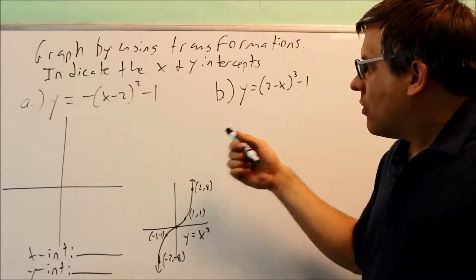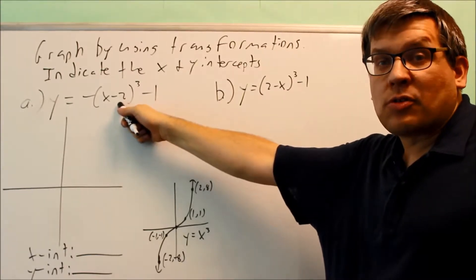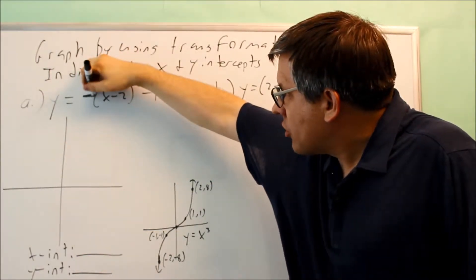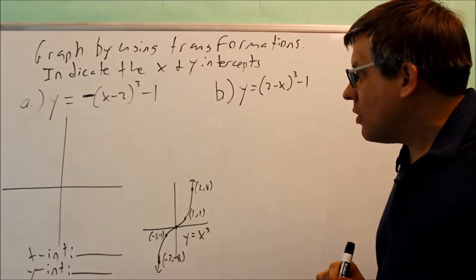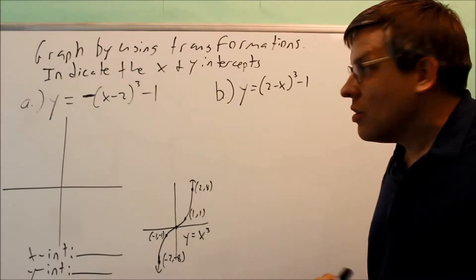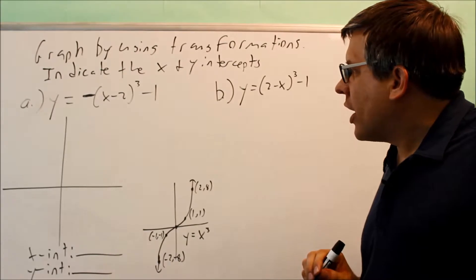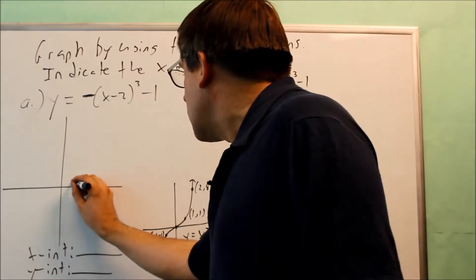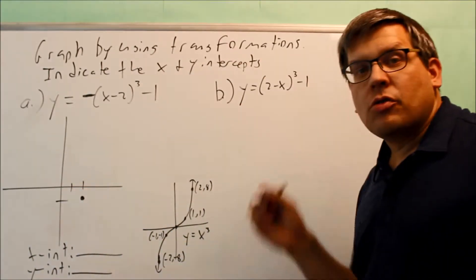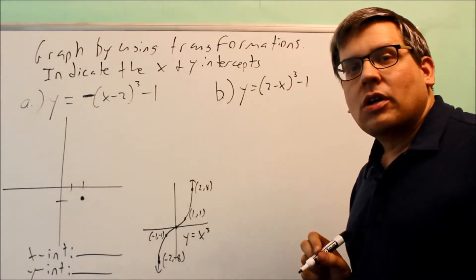What we have going on here is a movement of 2 to the right, because you've got a minus 2 there — you move it in the opposite direction, to the right. We're going to move it down one unit, but we also have a negative on the outside, which means we're going to be flipping it — a flip over the x-axis. Normally my (0, 0) is here, but instead it gets shifted over to that position.